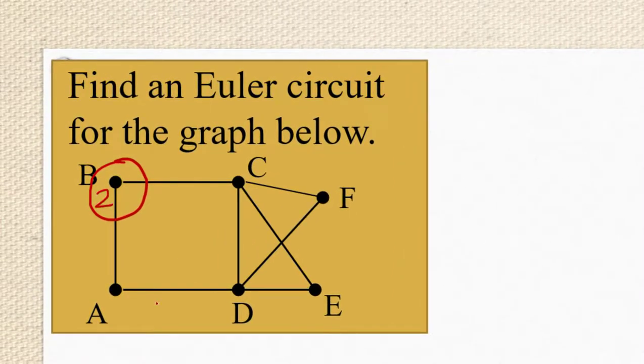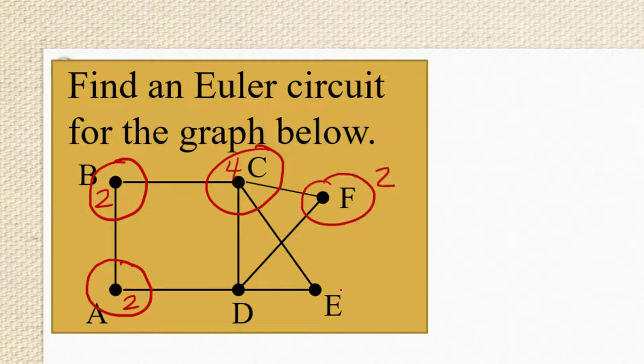Well vertex B has degree 2. Two edges are touching that vertex. Vertex A has degree 2. Vertex C has degree 4 also even. F has degree 2. E has degree 2. And vertex D has degree 4. So we know that this graph does in fact have an Euler circuit and we know that we can use Fleury's algorithm to find it.